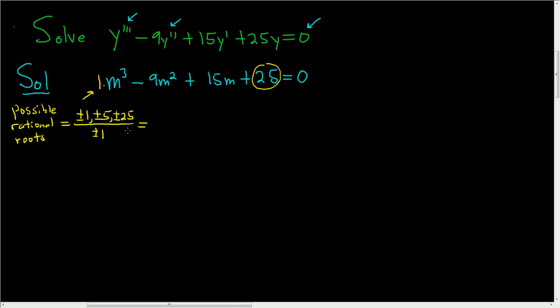So in this case, the possible rational roots are 1 over 1 is 1, 5 over 1 is 5, and 25 over 1 is 25. So these are the possible rational roots.